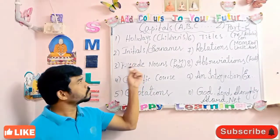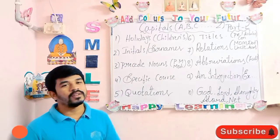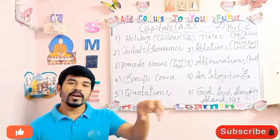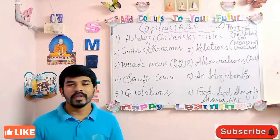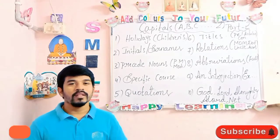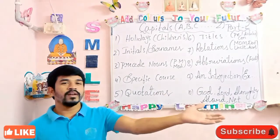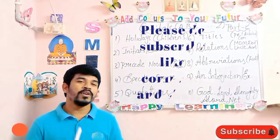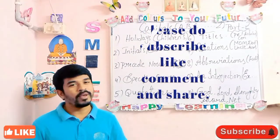Coming to the next rule — initials as well as surnames. What is your initial? What is your surname? The first letter must be in capital. For example, my surname is Poreddy — P should be in capital. Their surname is Duddhi — D should be in capital. Her surname is Challa — C should be in capital. Whenever you are writing initials or surnames, the first letter must be in capital.